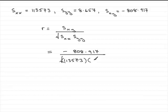Multiply that with SYY, which is 8.657. Do that on the calculator. What you get is minus 0.81579, and so on.